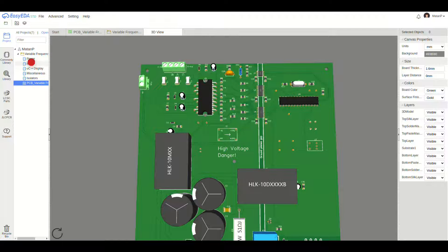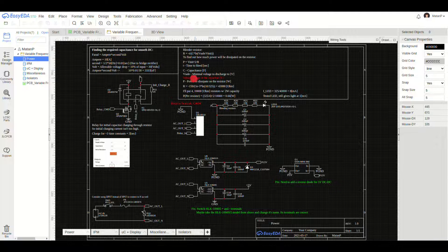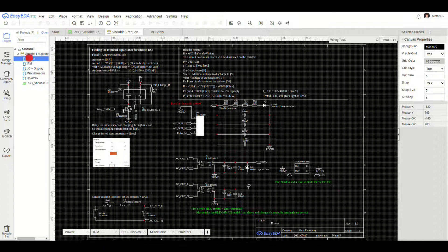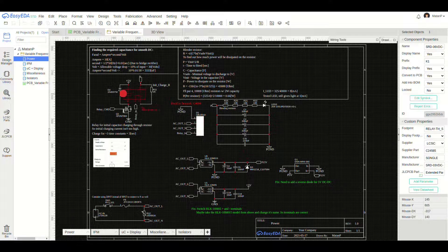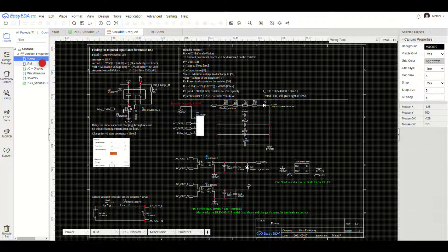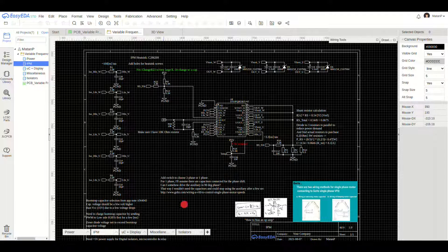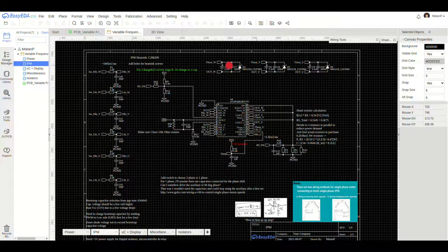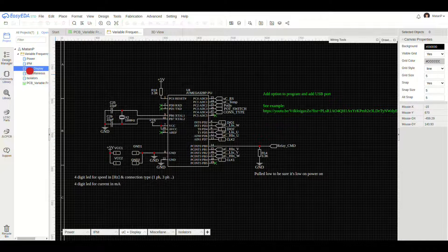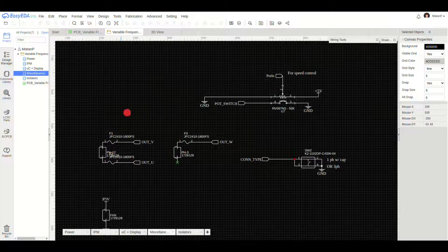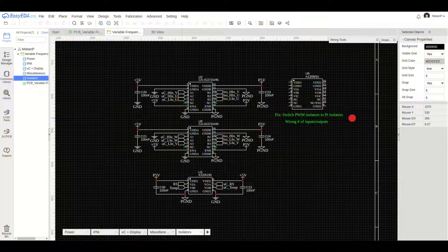I divided the schematics into a few blocks, and I also wrote a few notes and calculations for myself. So we have the power block, which contains the power modules, rectifier, and the capacitor bypass relay. Here we have the intelligent power module block, with all sorts of notes and calculations. This is the microcontroller block. The miscellaneous block contains the potentiometer, a button, and a few connectors. And finally, we have the isolator block.